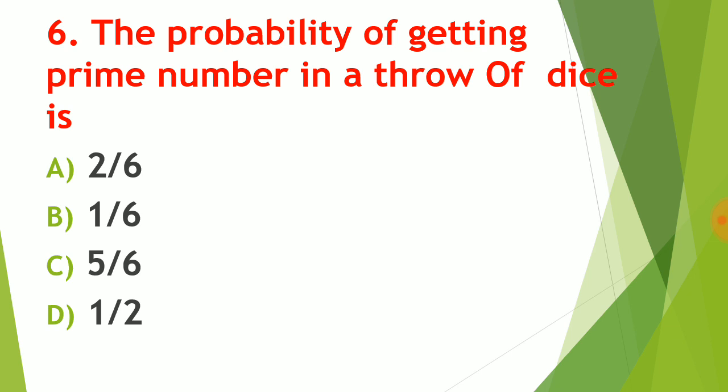Question number six: the probability of getting a prime number in a throw of a dice. If you throw a die, the possible outcomes are 1, 2, 3, 4, 5, and 6. The prime numbers among them are 2, 3, and 5. Total number of cases is 6, and the count of prime numbers is 3. So the probability is 3/6, which gives 1/2. The correct answer for question number six is option D: the probability of getting a prime number in a throw of a dice is 1/2.